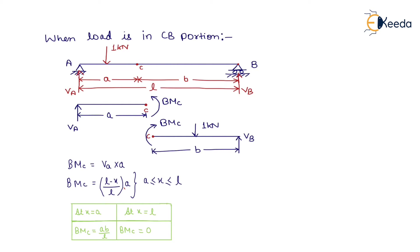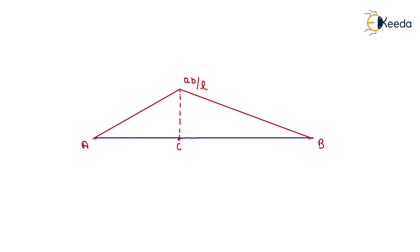After compiling all the values, the graphical representation shows that at x equals 0, bending moment at C is 0; at x equals L (that is A plus B), bending moment at C is 0; and at x equals A, bending moment equals AB by L. This triangular diagram is the influence line diagram for bending moment at C, representing the variation of bending moment with distance.